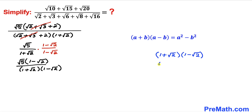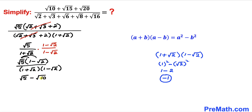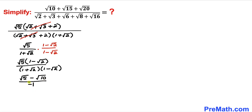Applying the identity: (1 + √2)(1 − √2) = 1² − (√2)² = 1 − 2 = −1. Distributing the numerator gives √5 − √10, all over −1. Dividing by −1 switches the signs, so the final simplified answer is √10 − √5.